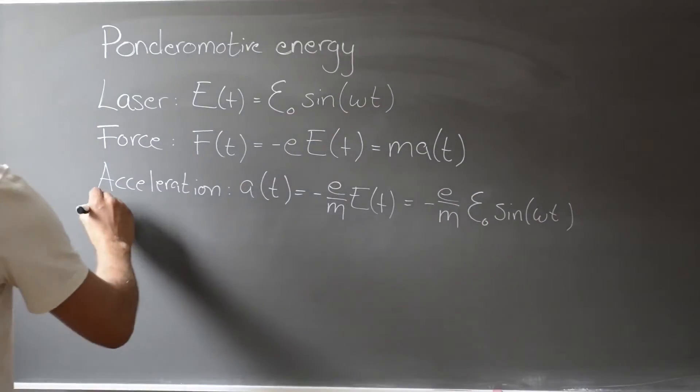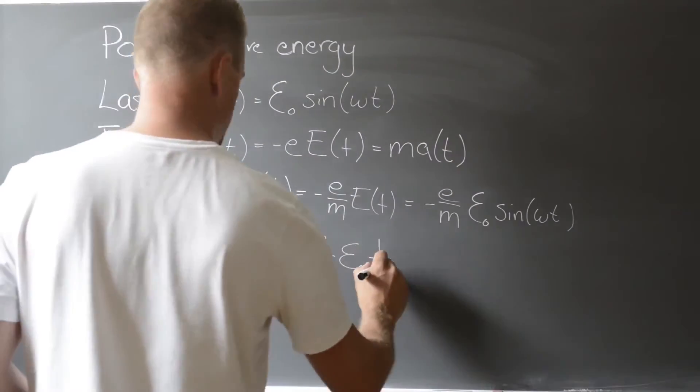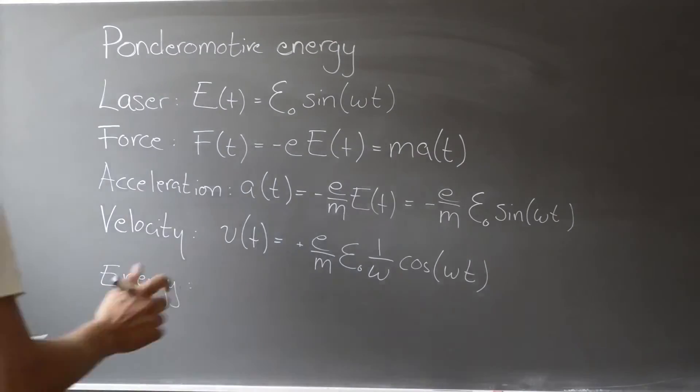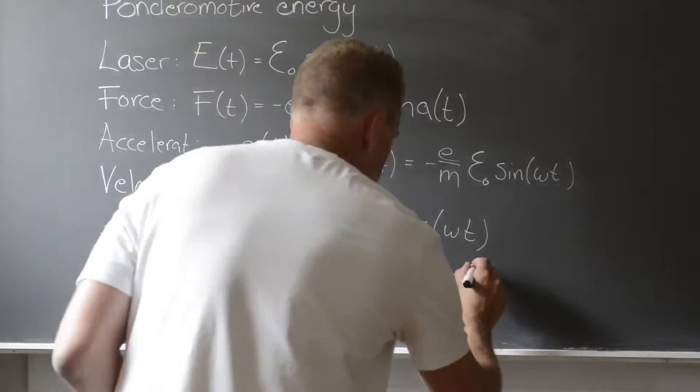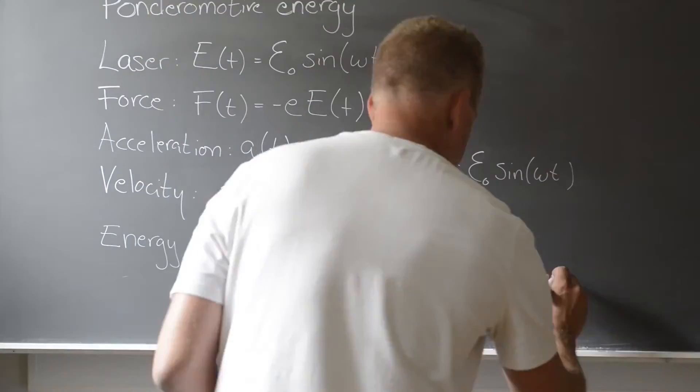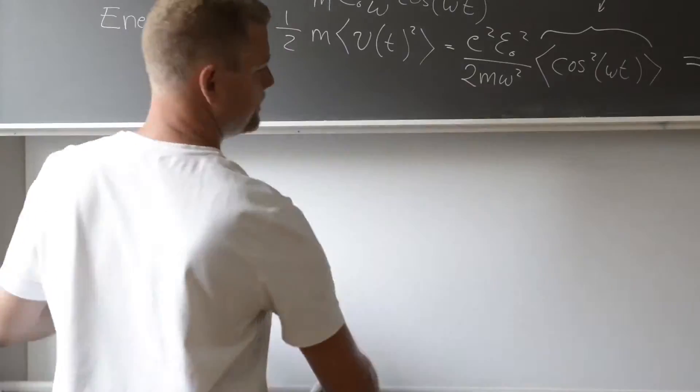And by integrating the acceleration, we get the velocity of the electron in the field. Finally, we can calculate the time average energy of the electron, which is the ponderomotive energy, like this. And since the time average of a cosine function is one-half, we end up with the following very compact expression for the ponderomotive energy.